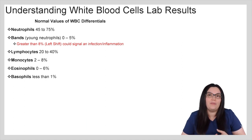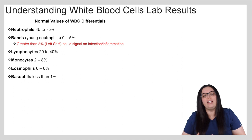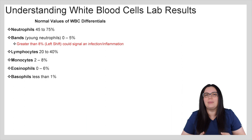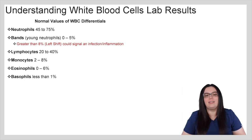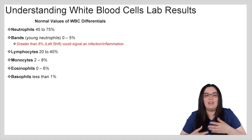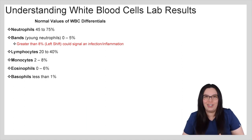Neutrophils: 45 to 75% is normal. Bands, which are young neutrophils, are typically between 0 to 5%. If it's greater than 8% that's something we call a left shift, meaning there could be some kind of infection or inflammation taking place in the body. Lymphocytes: 20 to 40%. Monocytes: 2 to 8%. Eosinophils: 0 to 6%. And basophils: less than 1%. If any of these numbers are abnormal, that lets us know specifically what's taking place in the body so that we can treat it appropriately.